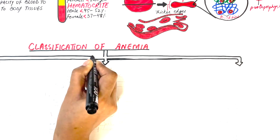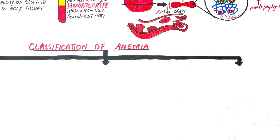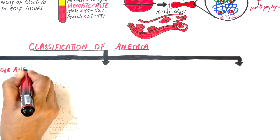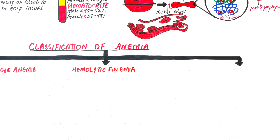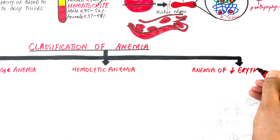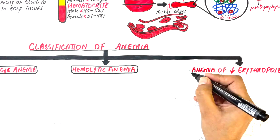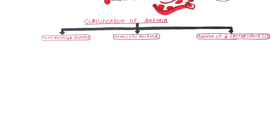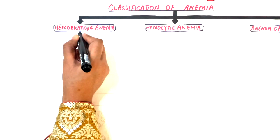Anemia can be of three main types: hemorrhagic anemia resulting from blood loss, hemolytic anemia resulting from increased red blood cell destruction, and anemia resulting from a decrease in red blood cell production or decreased erythropoiesis. Erythropoiesis is the process of red blood cell production, aided by erythropoietin hormone released from the kidneys.